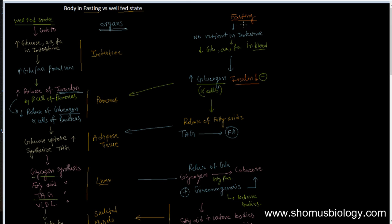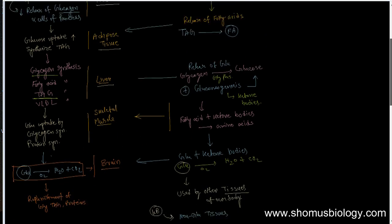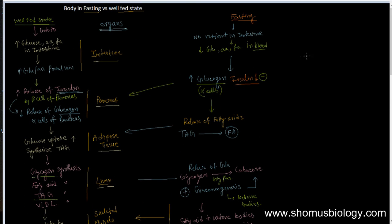This is the summary of what happens in two different states: the well-fed state and the fasting state. In both states, different organs are involved — starting from the intestine, pancreas, adipose tissue, liver, skeletal muscle, and brain — and we saw how these organs regulate the body's metabolism in both states. If you like this video, please hit the like button, share it with your friends, subscribe to the channel, and click the bell icon to get notified of new videos. Thank you, bye.